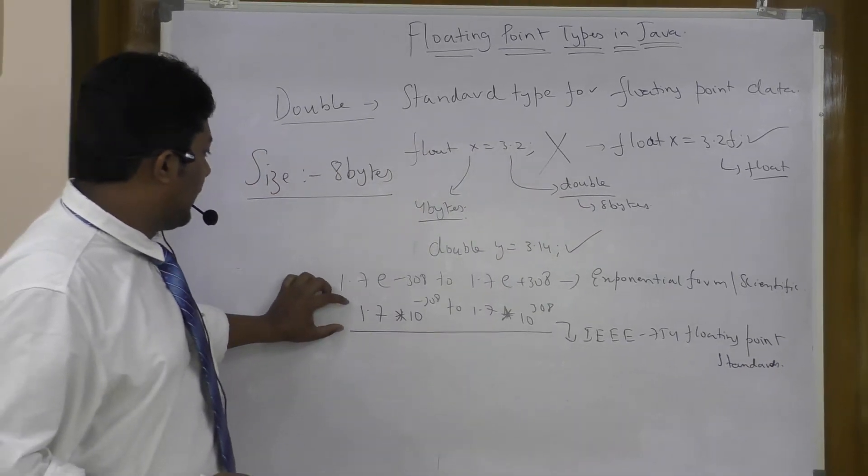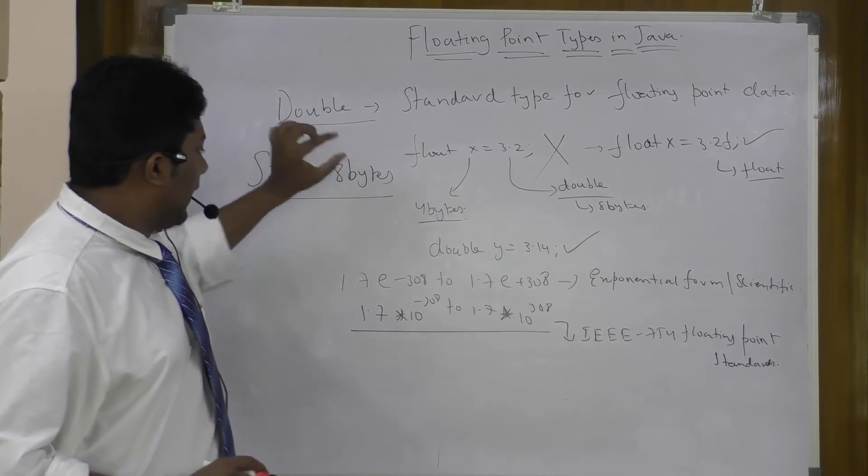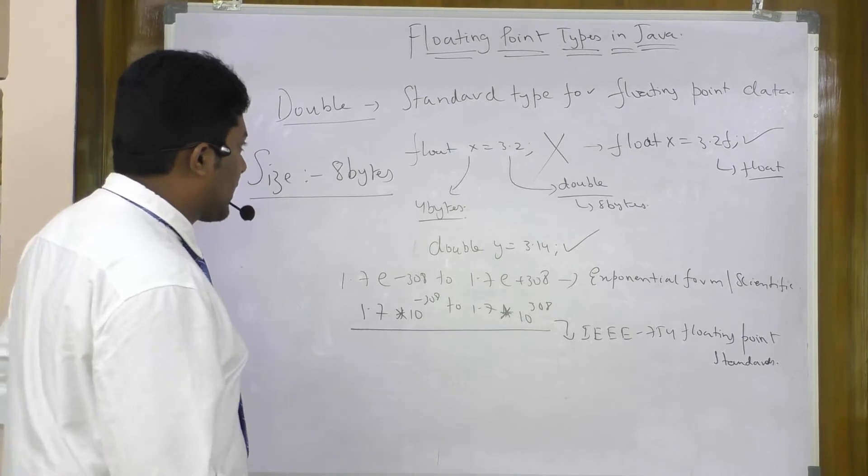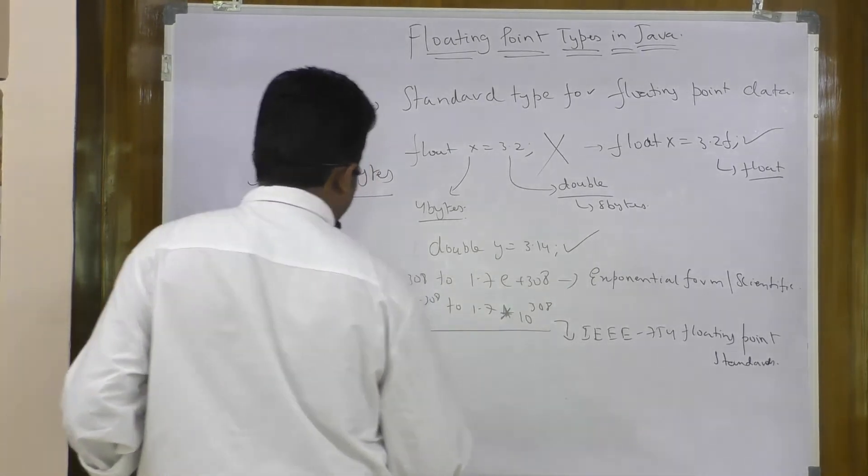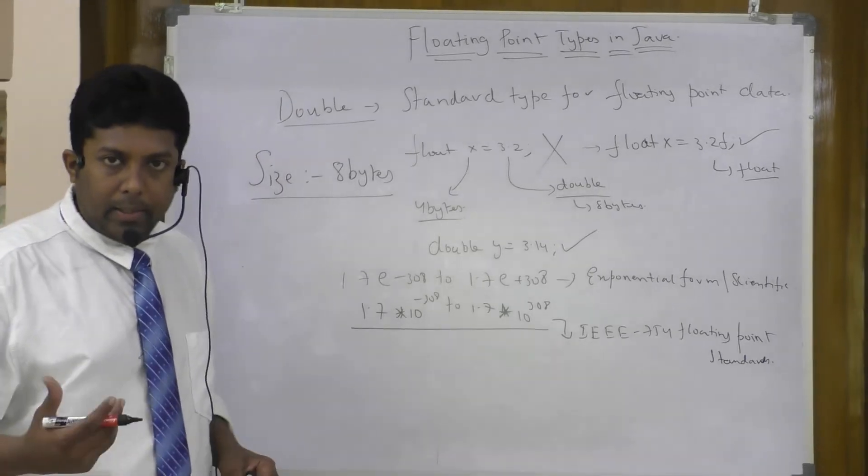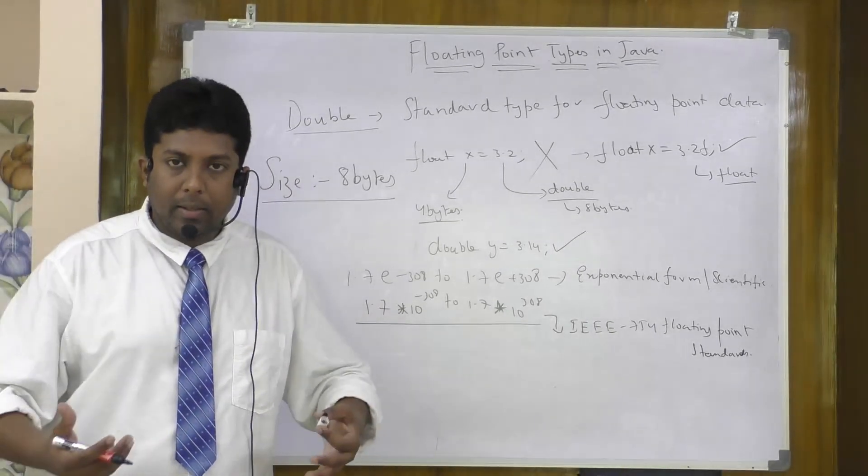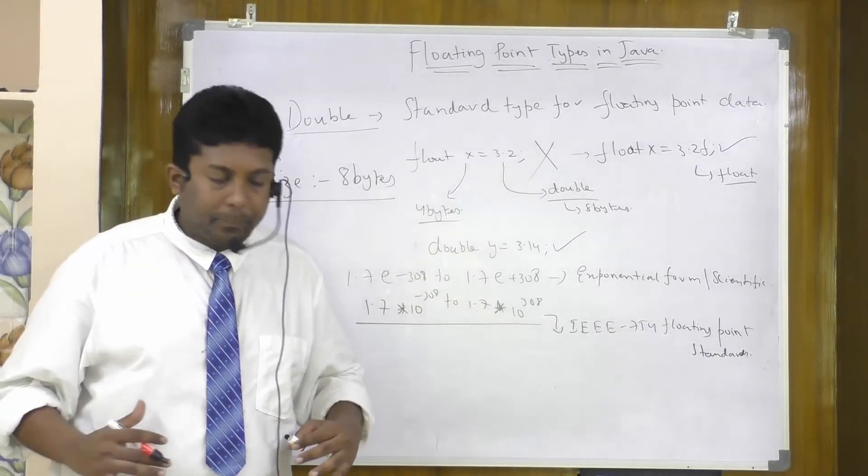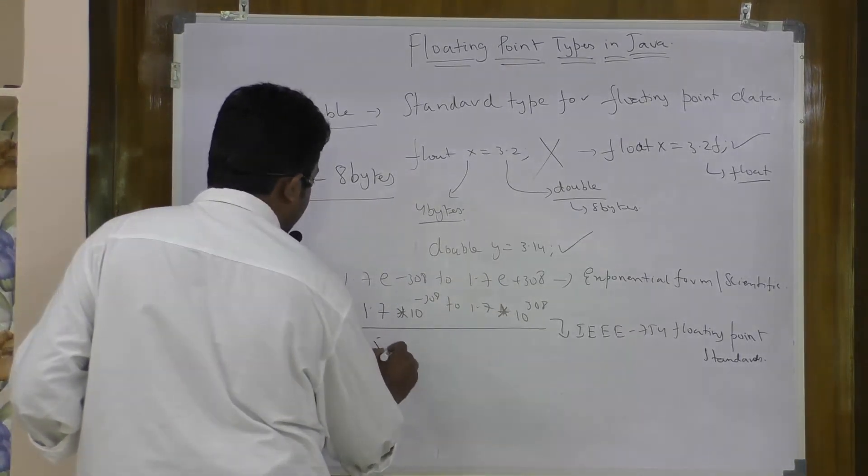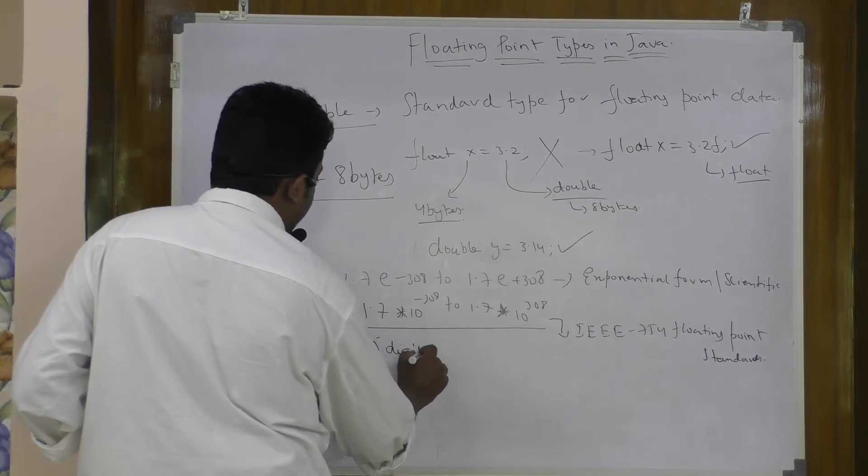According to those standards, double data type is given the range here. IEEE 754 floating point standards - this is the given range of double and the size is 8 bytes. Next, coming to the precision: as we have discussed, the precision value of float is 6, which means that it can handle only 6 digits after the decimal point.